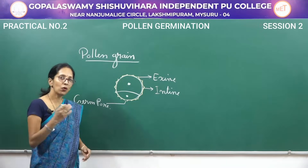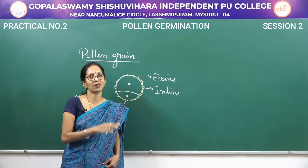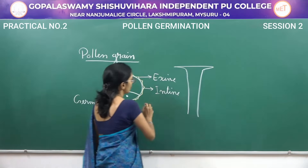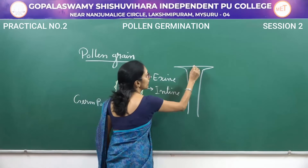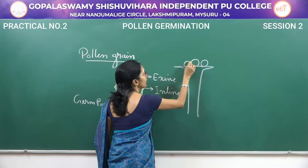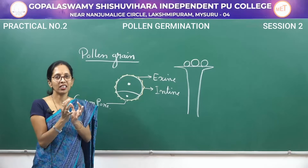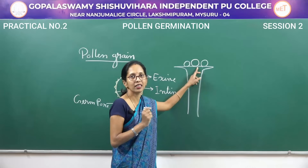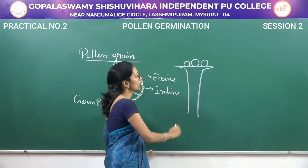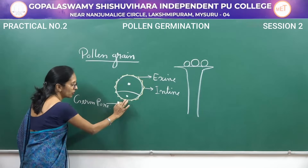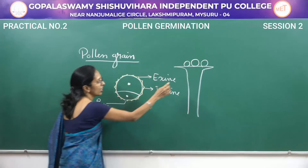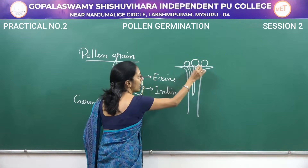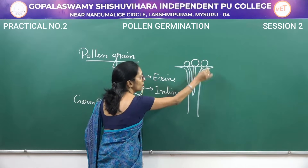Now when the pollen grain falls on the stigmatic surface, imagine this is the style and this is the stigma. When this pollen grain falls on the stigmatic surface, it absorbs water and sugar substances present in the stigmatic region. As a result, the germ pore region grows out as a tube-like structure, and this is said to be the pollen tube.